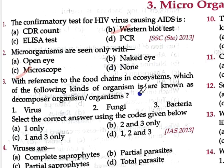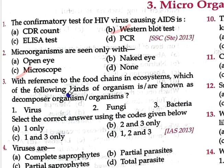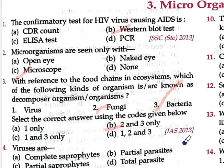With reference to the food chain and ecosystem, which of the following kind of organism is known as a decomposer organism? Option A: Virus, Option B: Fungi, Option C: Bacteria. Decomposers — both Fungi and Bacteria decompose dead organisms. So here the decomposer organisms are Fungi and Bacteria. Option B (Fungi and Bacteria) is correct. This is a 2013 question.